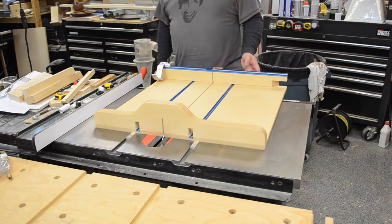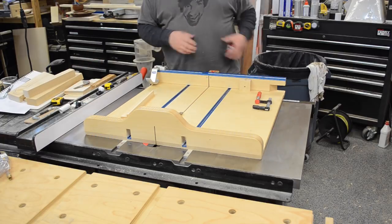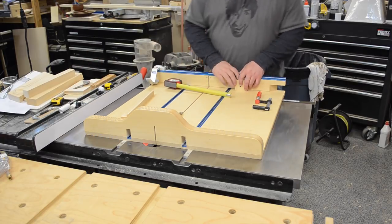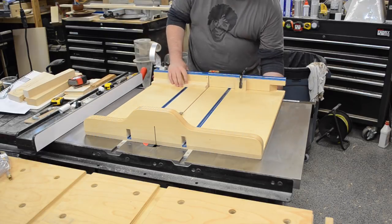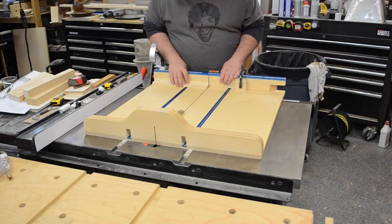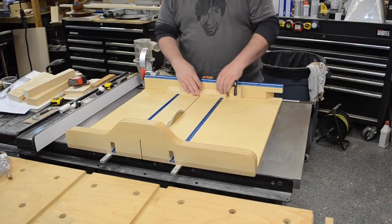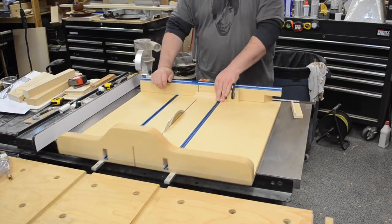Then I installed my table saw sled. In this case, I was working on another project where that aluminum stop was on, so I didn't want to mess with that. So I just installed a wood stop to work with this particular build. Good practice is make sure to square up one edge of your piece, then you can slide it over to your stop and make your cut.